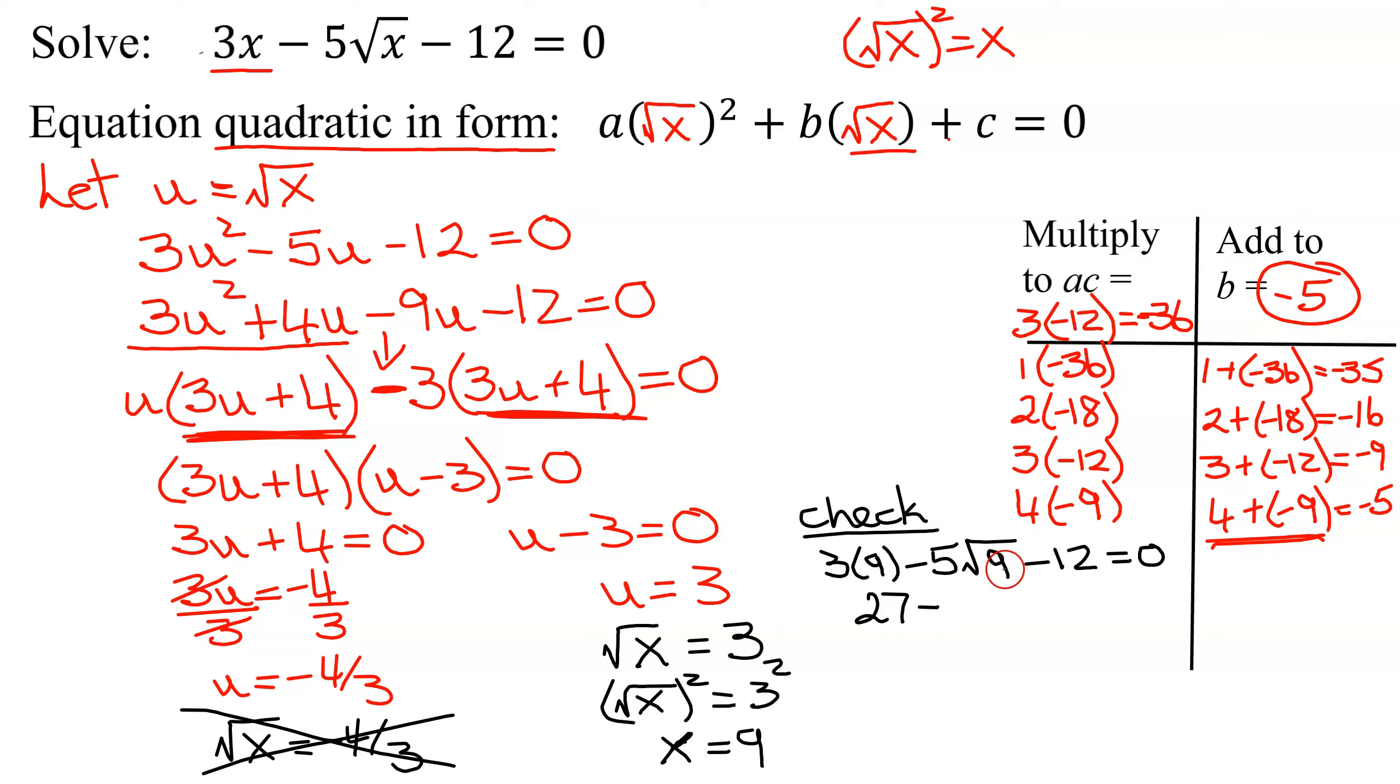3 times 9 is 27, minus the square root of 9 is 3, 3 times 5 is 15, minus 12, equals 0. 27 minus 15 is 12, does 12 minus 12 equal 0? 0 equals 0. That is a true statement. So this equation has one solution of x equals 9.